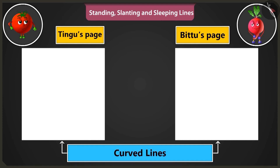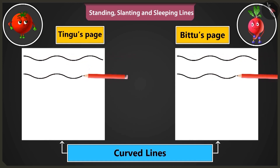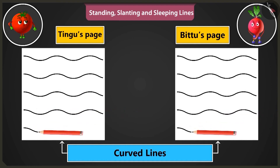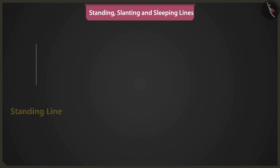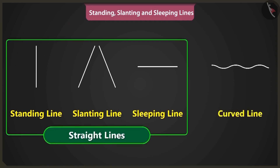Well done, Bittu. Now let us practice making curved lines. To practice, we have to start drawing lines from the left side of the page to the right side of the page. This is the way to make curved lines. Hey, this looks like waves of the sea. Now you can easily draw pictures using straight lines like standing lines, slanting lines, sleeping lines and also with curved lines.